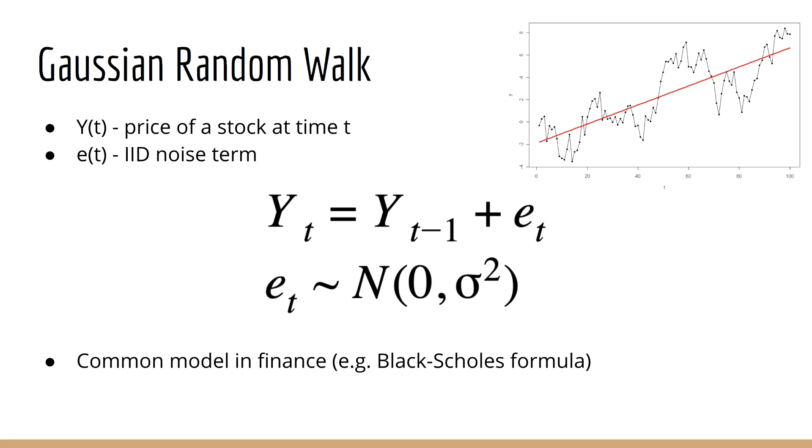The assumption we're going to make is that this error term e(t) is Gaussian with zero mean and variance sigma squared, and all of the e(t)s are iid, meaning they all come from this same Gaussian distribution and they are all independent of each other.